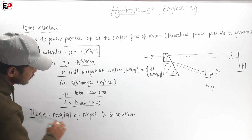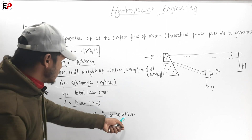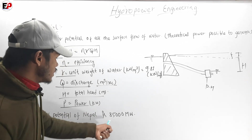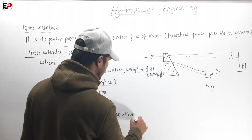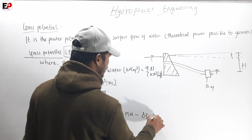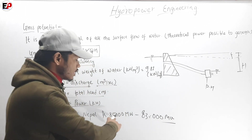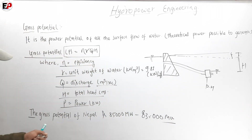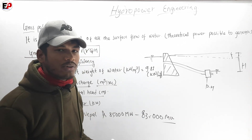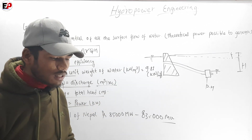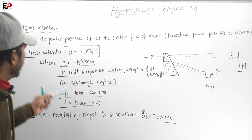The gross potential of Nepal is 85,000 megawatt. In Nepal, the gross potential is 85,000 megawatt — this is the theoretical potential that can be generated from many parts of the country.